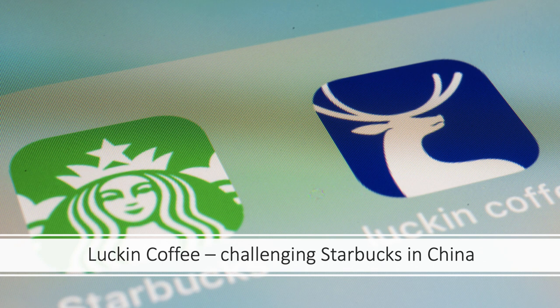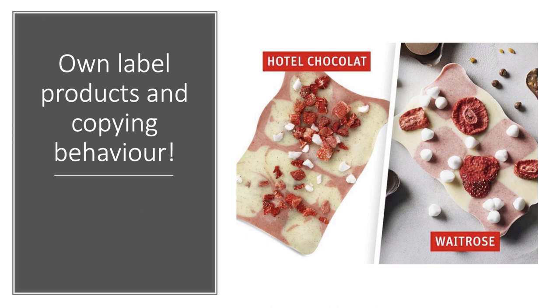In China, Luckin Coffee now has more outlets and more coffee stores than Starbucks in China. It is one of the big challenges to the monopoly power of Starbucks in China.